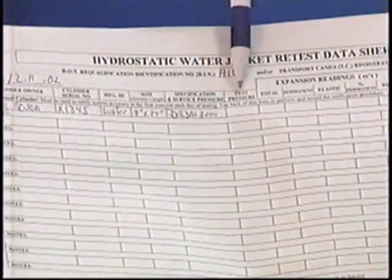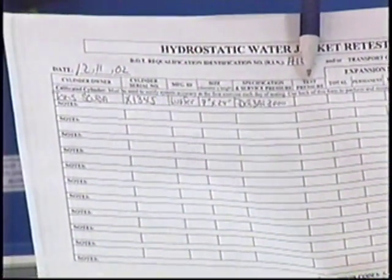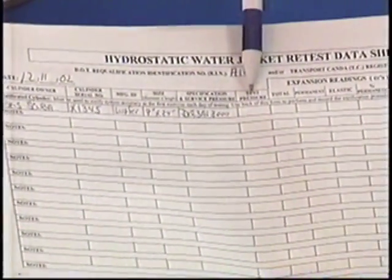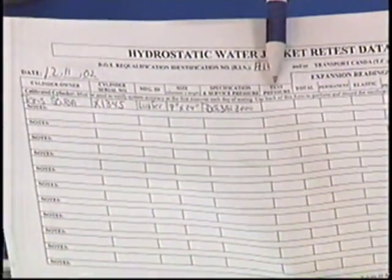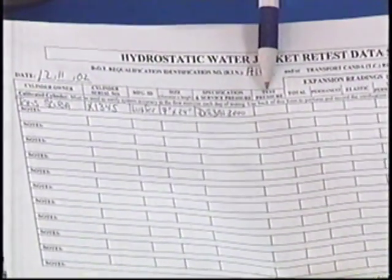You notice that we do not fill in the test pressure until we actually hit that test pressure. The minimum prescribed test pressure is 5000. But if we overshoot that and go to 5020, that is the number that we should write in.